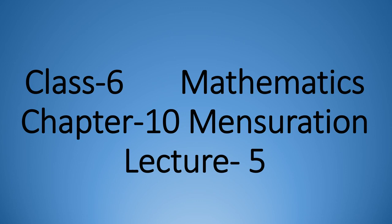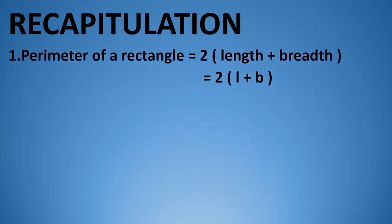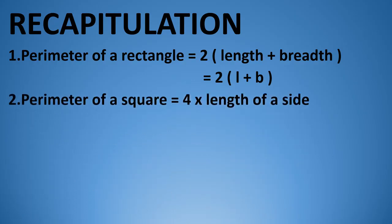In this lecture, first of all, we are going to recapitulate all the formulas for finding the perimeter. First, perimeter of a rectangle is equal to 2 bracket length plus breadth. Second, perimeter of a square equal to 4 multiplied by length of a side.